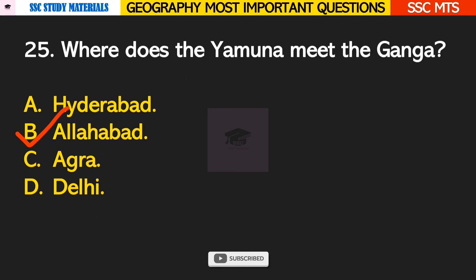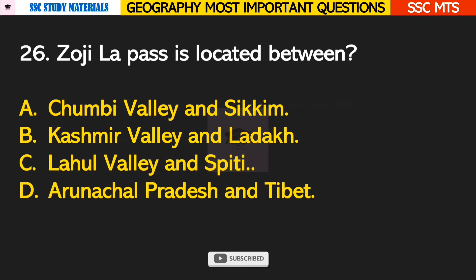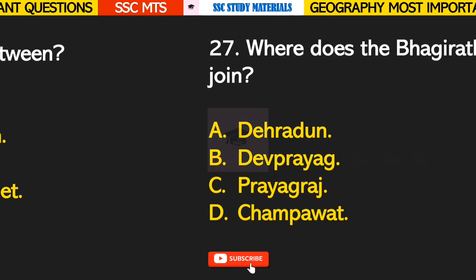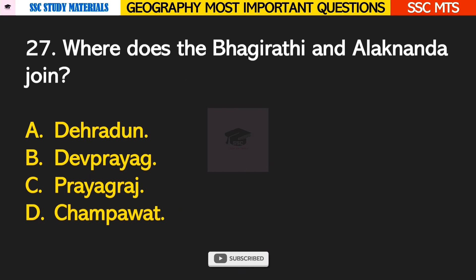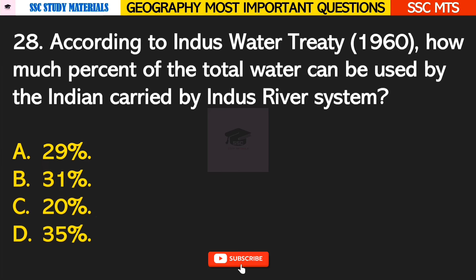Question number 25: where does the Yamuna meet the Ganga? Answer B — Yamuna meets the Ganga in Allahabad. Question number 26: Zoji La Pass is located between Kashmir Valley and Ladakh.